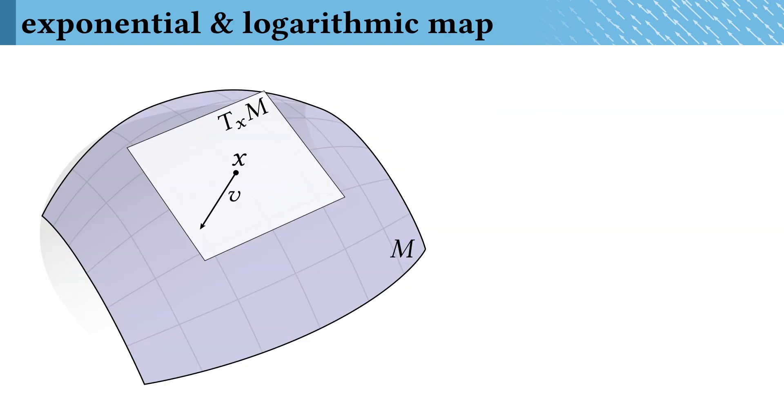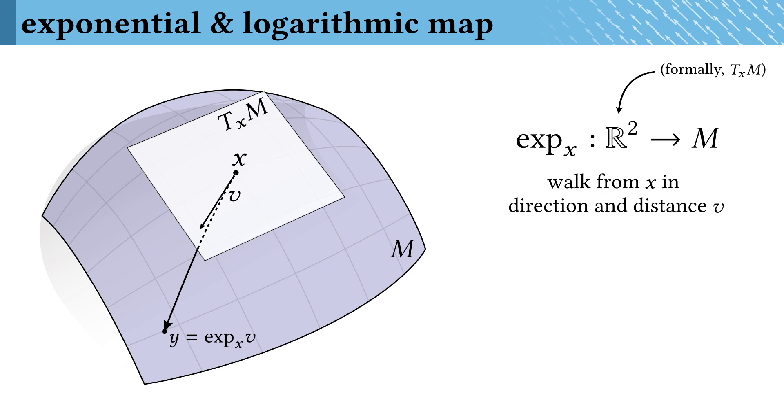Moving on, the exponential map is a basic concept from differential geometry. For any point x on the surface, the exponential map takes a vector in the tangent space of that point and walks in that direction and distance along the surface, returning the resulting point on the surface, which you see here on the left.